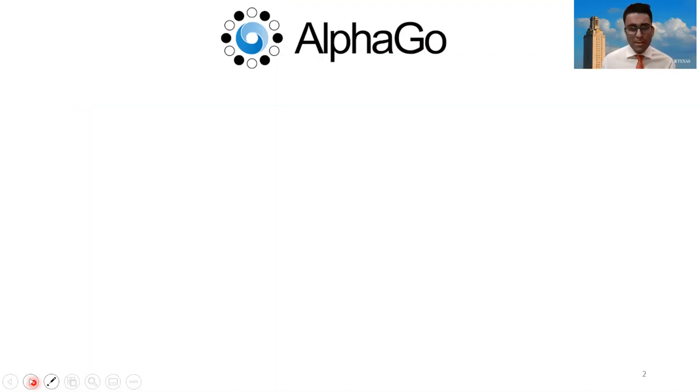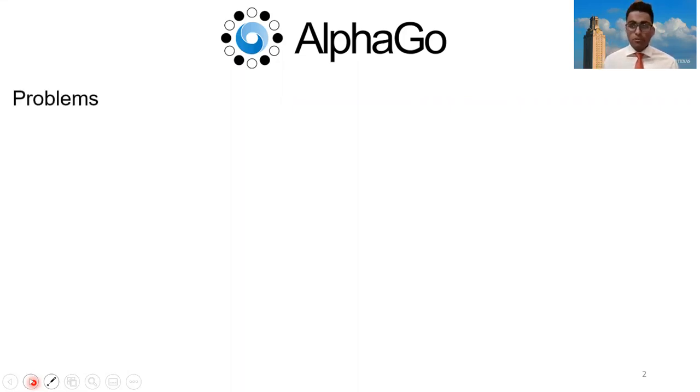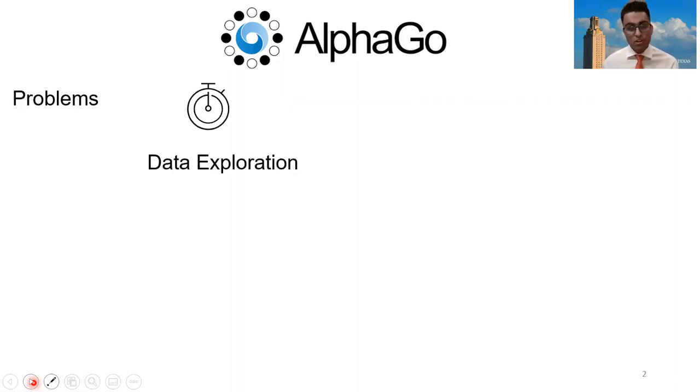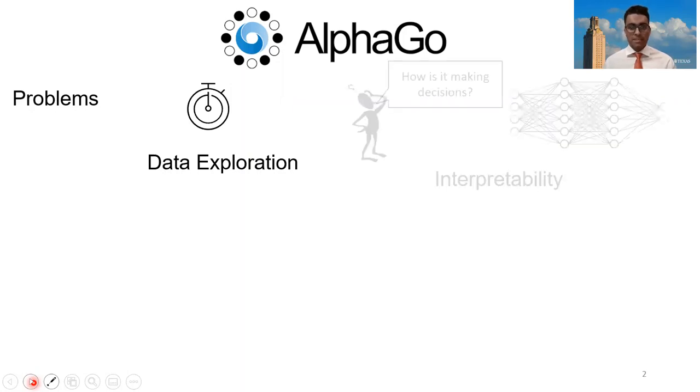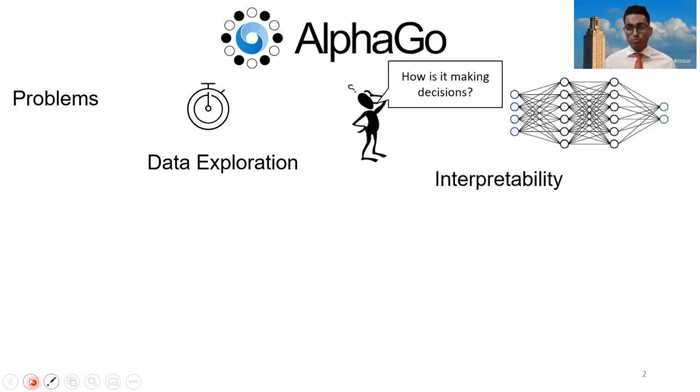Let's set the framework for our paper. In recent years, deep reinforcement learning has achieved human-level performance in a variety of fields. To give one example, AlphaGo is a program that can play the game of Go better than the best human player in the world. However, this comes with a couple of problems. First, deep reinforcement learning algorithms often require a lot of data exploration, which takes an extended amount of time. Second, it's hard to interpret what these machines are doing — how they are making decisions is a hard question to answer.